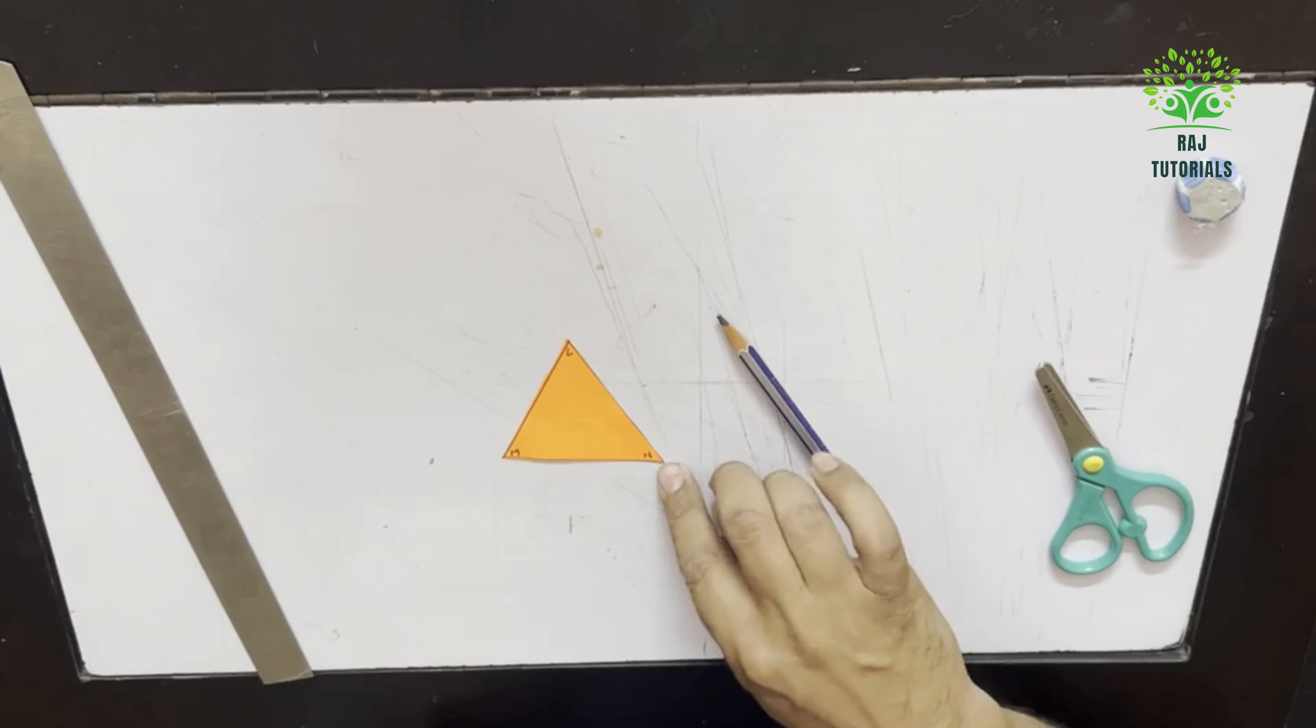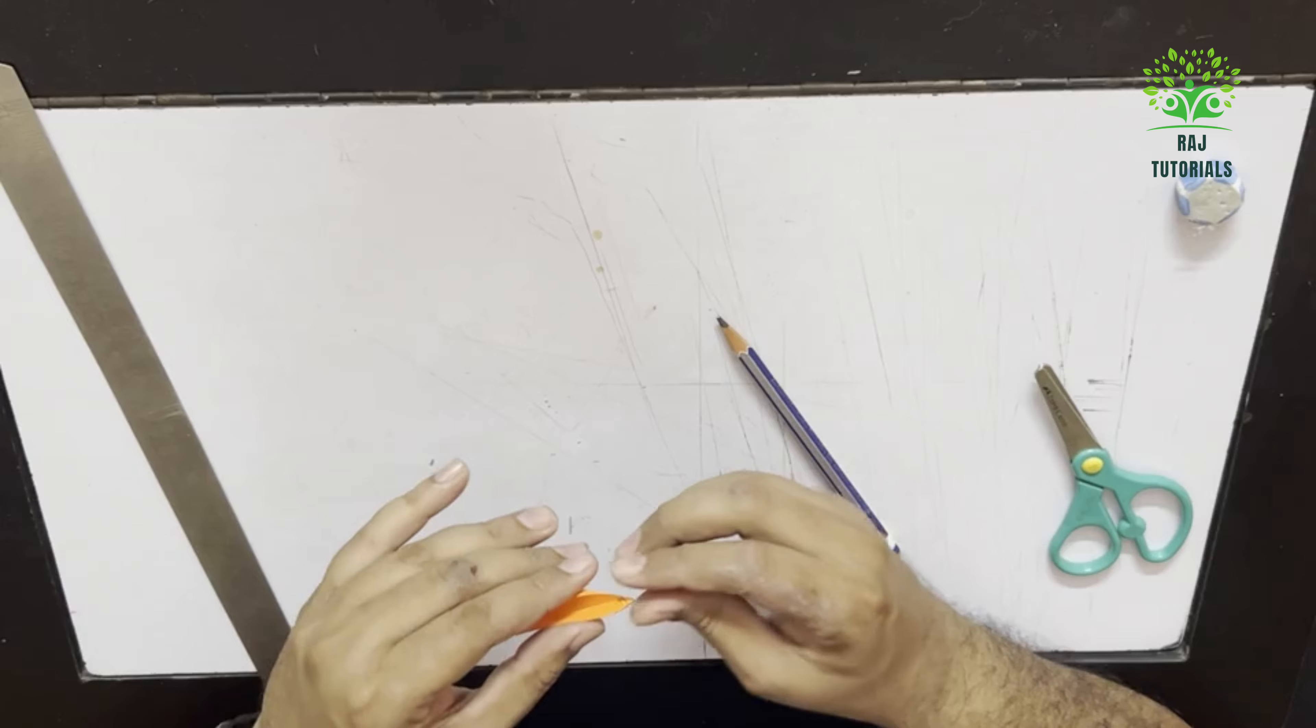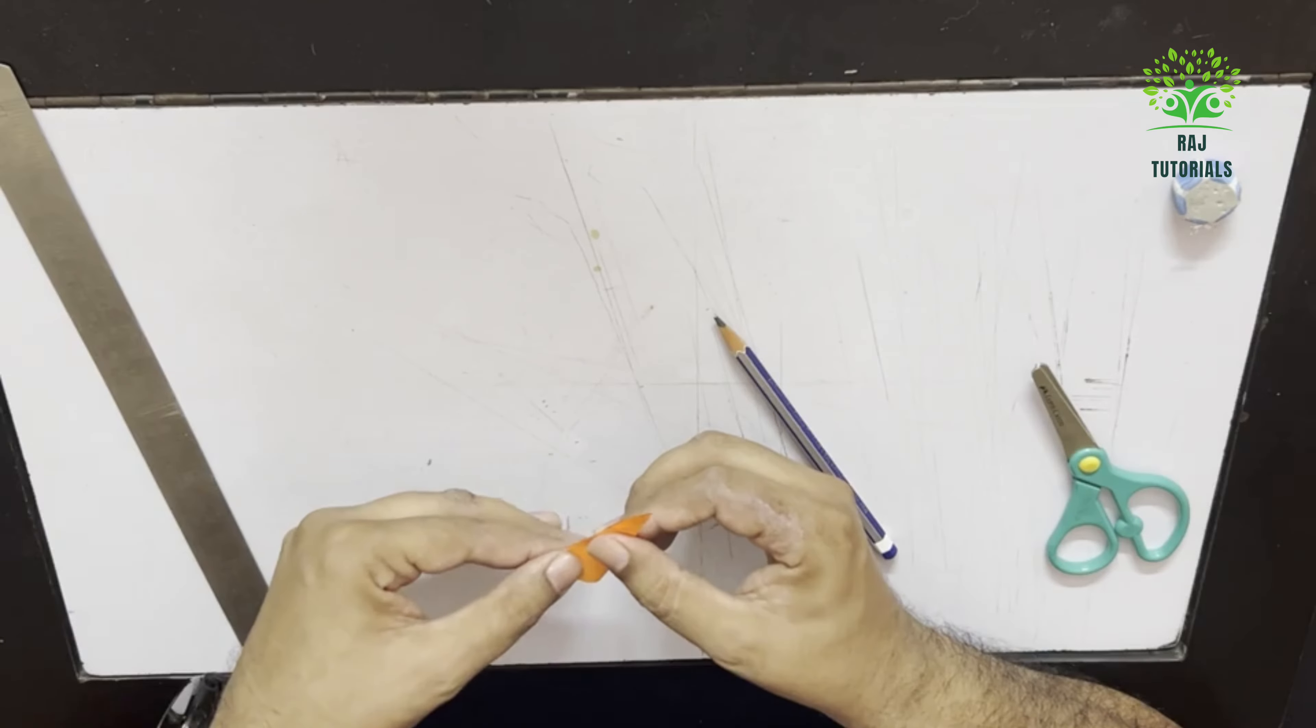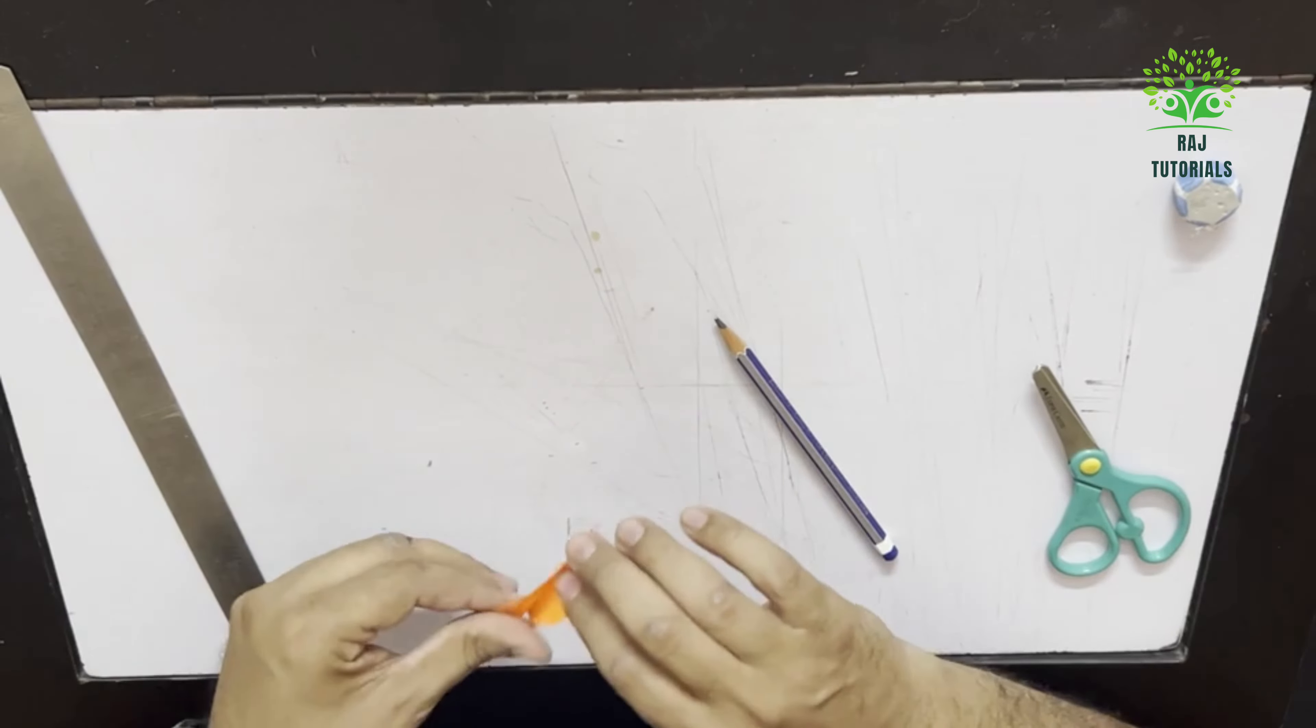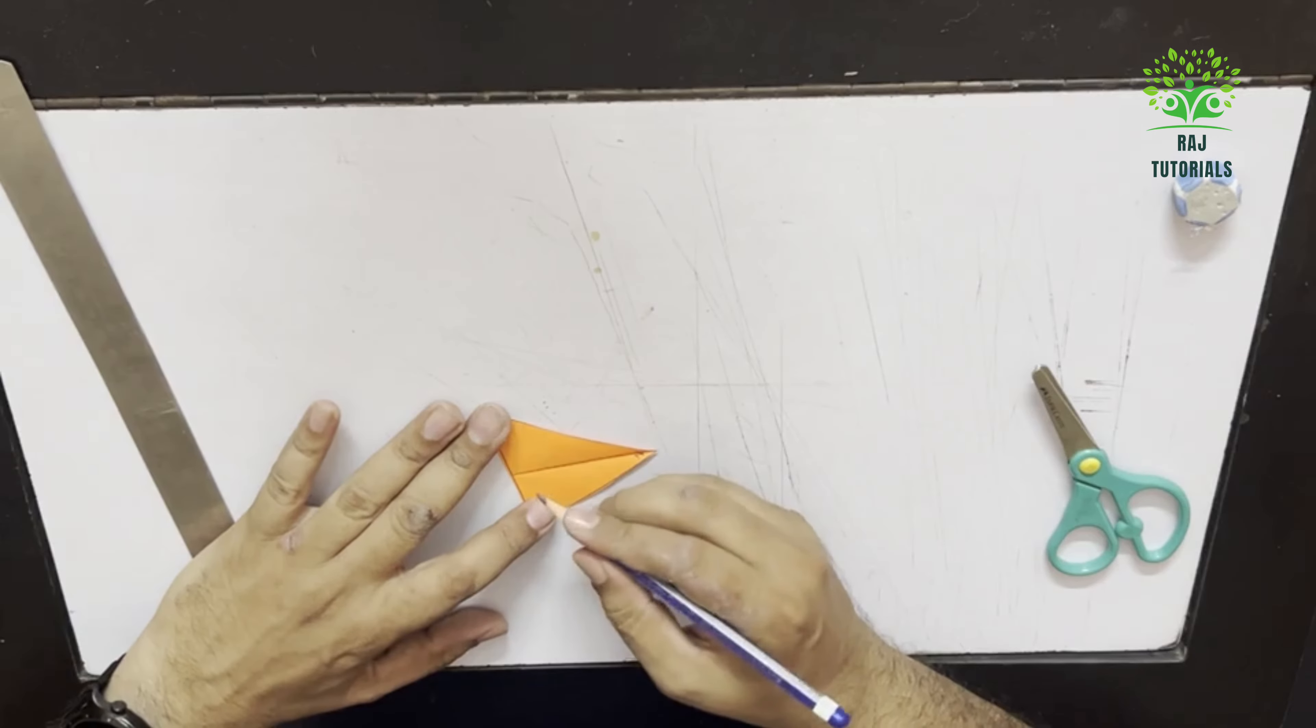So, this is my triangle. Now, I am going to work on the triangle. Let me draw what we need to do for this activity.